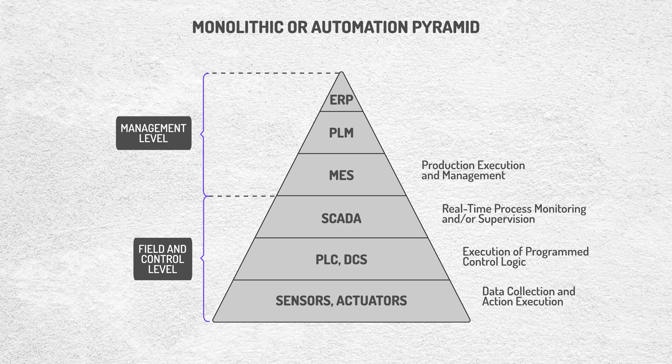Then we have PLM, which is associated with innovation and continuous improvement. And finally, we have the ERP level — enterprise resource planning — which uses plant data to make business decisions. With this clear foundation, we're going to focus on one of the key aspects of this structure: the use of PLCs in automation, and understanding why they're so important in today's industry.